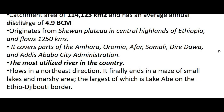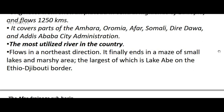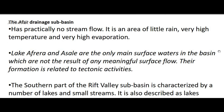The Awash is the most utilized river in the country and flows in a northeast direction. It finally ends in a maze of small lakes and marshy areas, the largest of which is Lake Abe on the Ethiopia-Djibouti border. The Afar drainage sub-basin has practically no stream flow; it is an area of little rain, very high temperature, and very high evaporation. Lake Afrera and Assale are the only main surface waters in the basin, and their formation is related to tectonic activities rather than surface flow.